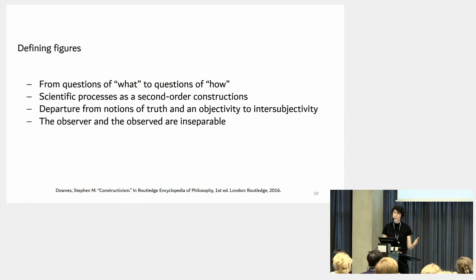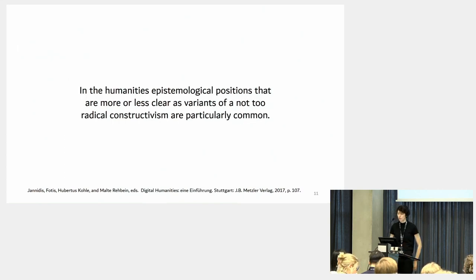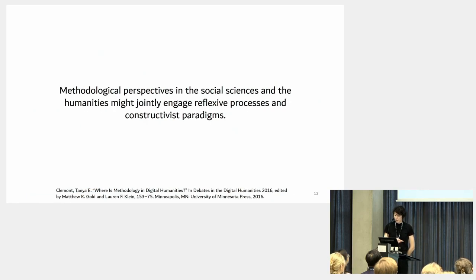So the question now is when and how do DH scholars talk about constructivism? I brought three examples and the first one is from Jannidis et al. It's an introduction book into the digital humanities and they state, in the humanities, epistemological positions that are more or less clear as variants of a not-too-radical constructivism are particularly common.